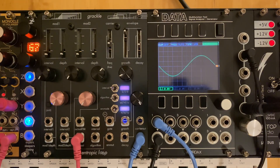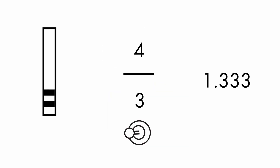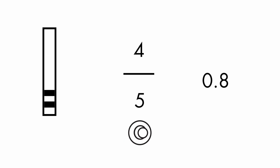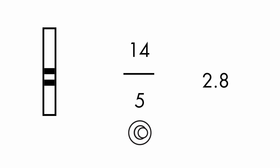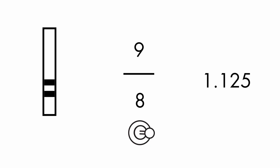The frequency of the mod oscillators are determined by multiplying the frequency of the carrier oscillator by a ratio set by a combination of the interval sliders and interval switch. The interval sliders select a number between 1 and 32, which is divided by the number set by the interval switch: 3, 5, or 8.